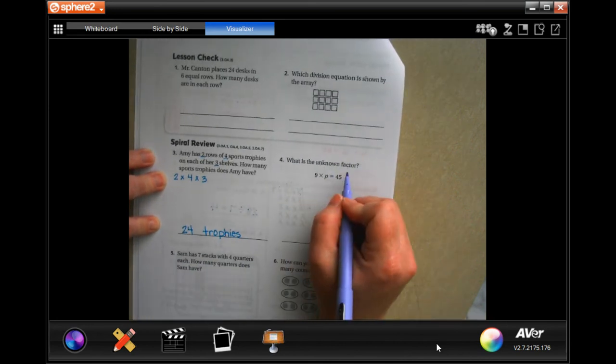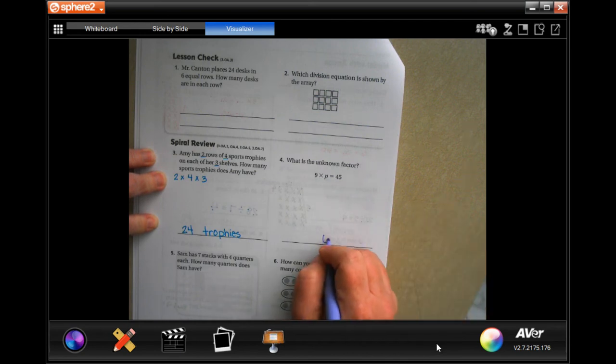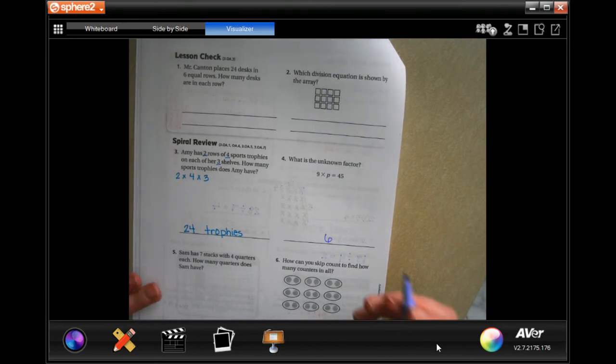Okay, what is the unknown factor? Nine times what is 45? Well nine times six is 45. Ah just kidding, nine times five is 45. Nine times six is 54. Sorry guys, my bad.